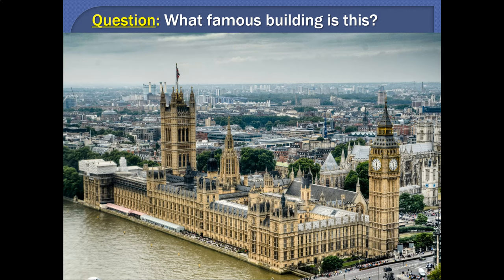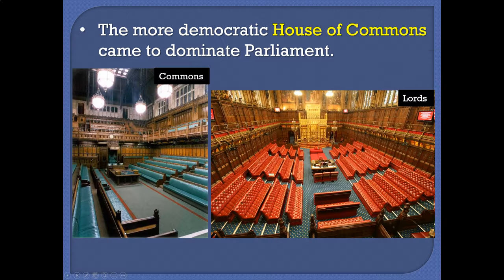What are they voting for? One of the things they're voting for would be representatives in a particular organization that meets in this building. This is called the Palace of Westminster, but we know it better as the Parliament Building. Parliament, the way it's set up, is there are two houses.